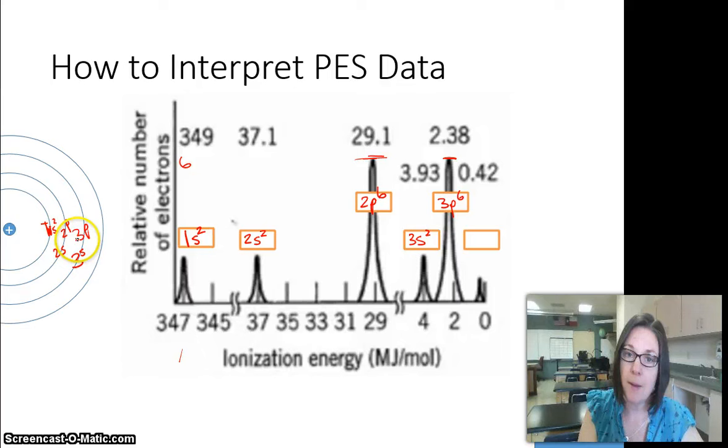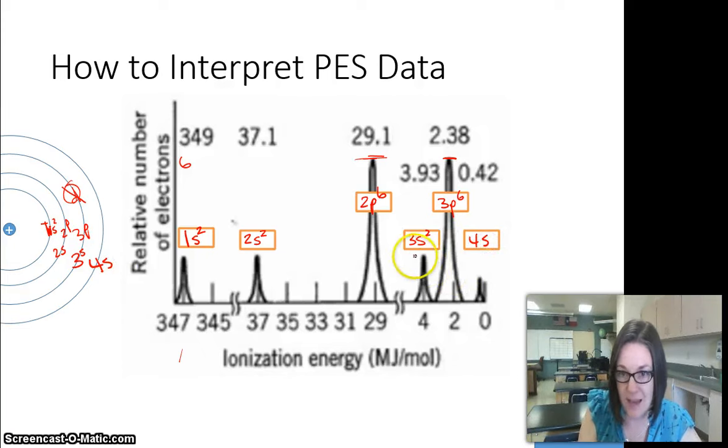And then, if you remember, we don't go to the D-sublevel yet. We go to the fourth energy level and to the S-sublevel. So this is going to be 4S, and if you notice, it is much shorter than the other S-peak, which means it's going to be only one electron instead of two.